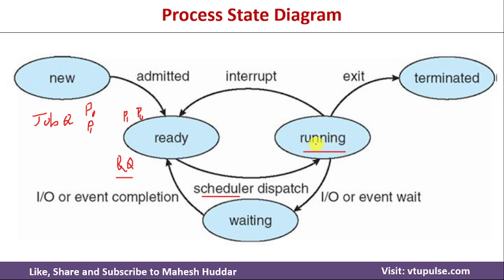Based on the scheduling algorithm, a process is put onto the CPU — that is the running state. If the CPU is already executing another process, P0 and P1 have to wait in the ready queue. Once the CPU is free, one process is selected — say P0 — and allocated CPU time. When P0 completes execution, it goes to the terminated state and all allocated resources are released.